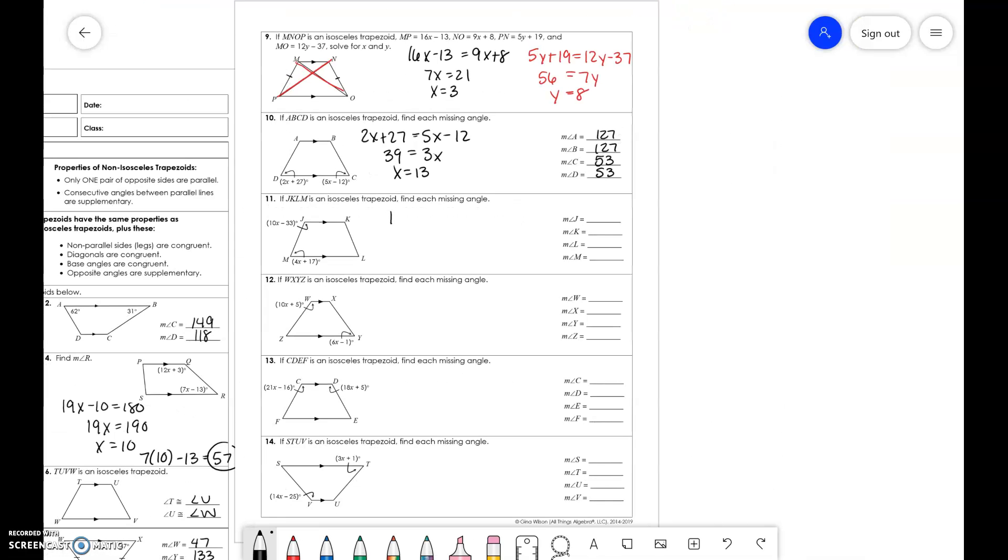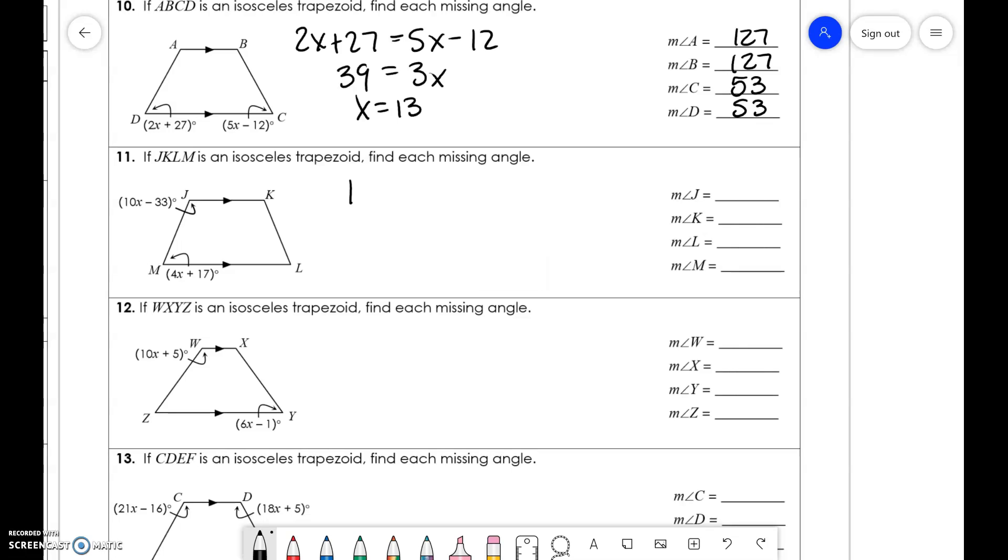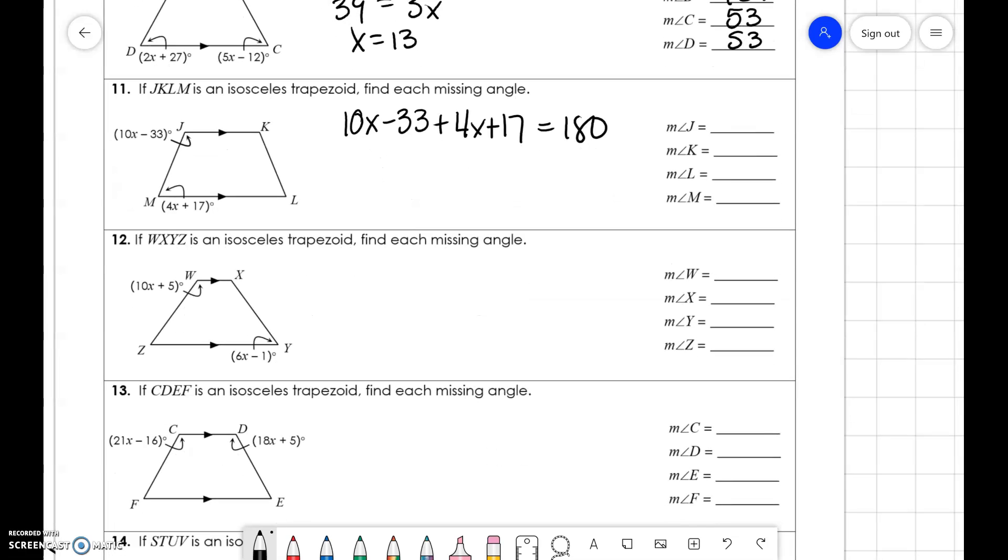Isosceles trapezoid for this one. Consecutive angles are supplementary. So, 4X, these two angles equals 180. And I'm confident that you guys could solve that one.